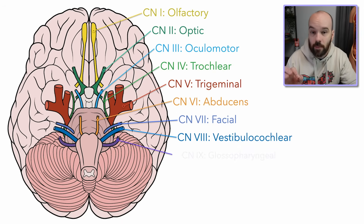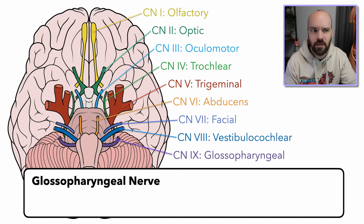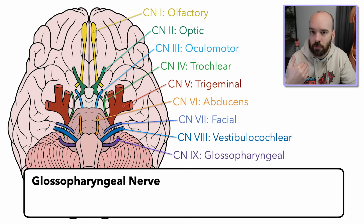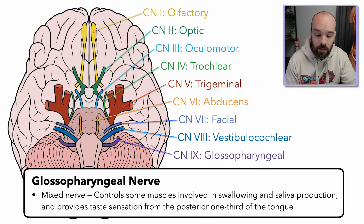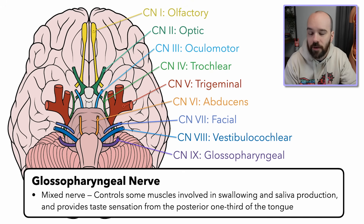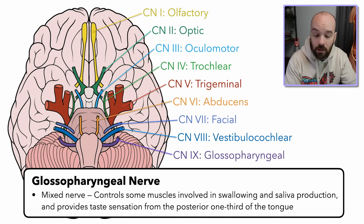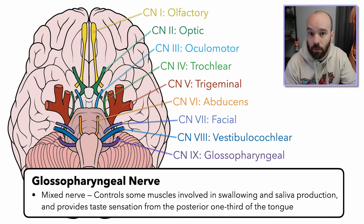Cranial nerve number nine is the glossopharyngeal nerve. Glosso, like glossary, refers to the tongue, and pharyngeal refers to the pharynx or back of the throat. The glossopharyngeal nerve is a mixed nerve — it controls some muscles involved in swallowing and saliva production, and it's sensory for the posterior third of the tongue, which is the back of the tongue. Remember, the facial nerve was sensory for the anterior two-thirds.